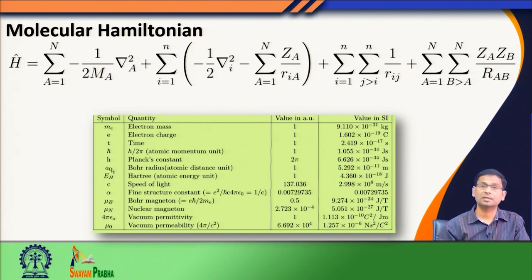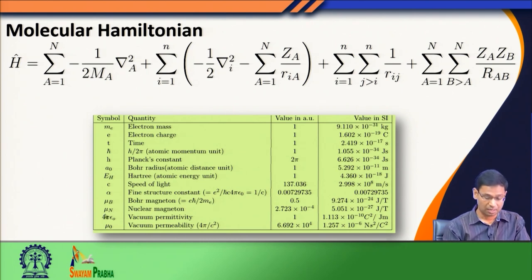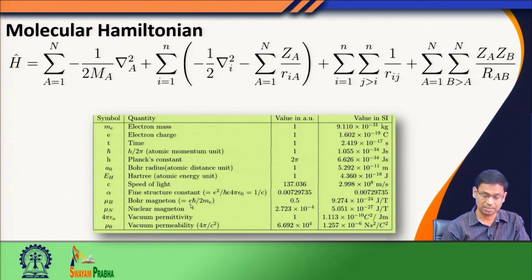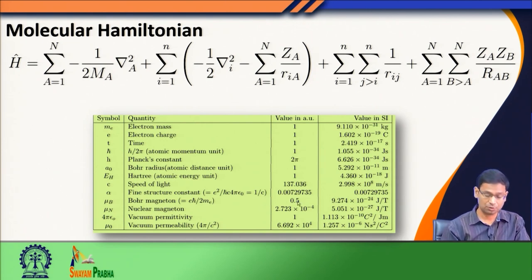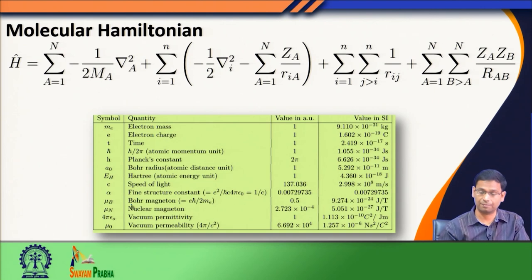Bohr's radius is the unit of length in atomic unit, made equal to 1, which is equivalent to 0.53 Ångström. Regarding the Bohr magneton discussed when we treated the Zeeman effect — it is expressed as eℏ divided by 2mₑ — since e is 1, ℏ is 1, and the mass of the electron is 1 in atomic units, the Bohr magneton μ_B simply becomes one-half. So by using atomic units we can simplify our description of the Hamiltonian quite a bit.